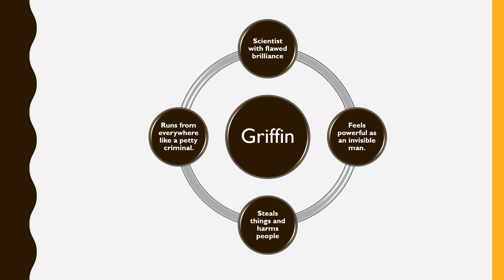Coming to the character sketches — the main character of the story is Griffin. He is a scientist with flawed brilliance. He never abided by the laws; he cheated on his landlord and tried to steal money. He never used his invention for a right path.